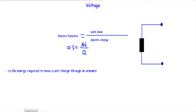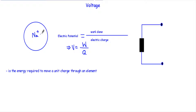Electric potential V equals W divided by Q. To illustrate this, consider a sodium atom that loses its valence electron — it becomes positively charged. This positively charged sodium atom creates an electric field around it, roughly circular in shape. Let's say point A is a point inside this electric field, and a unit charge +Q sits outside this electric field where the voltage is zero volts.